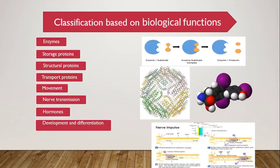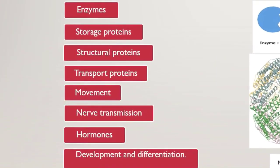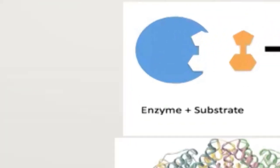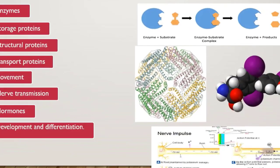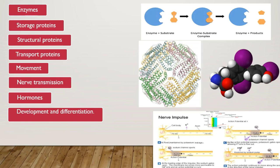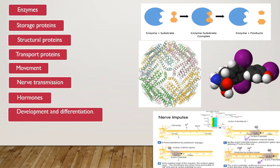Next ہمارے پاس ہے classification based on biological functions. سب سے پہلے enzymes ہیں جو کہ مختلف biological reactions کو کروانے کے لیے ضروری ہوتے ہیں. اس کے بعد storage proteins ہیں — these storage proteins are actually the biological reserves of metals اور amino acids. ان کی example میں ferritin ہے جو کہ iron کو reserve کرتی ہے. Next structural proteins ہیں جیسا کہ collagen، جن کا کام body کو support provide کرنا ہے.